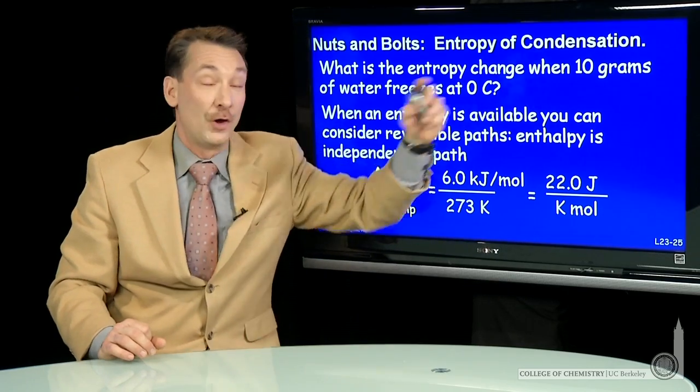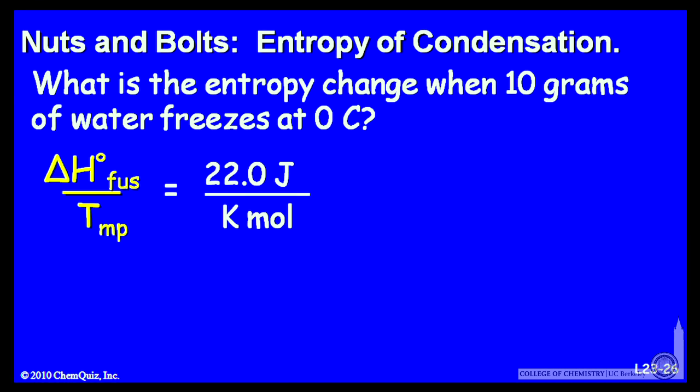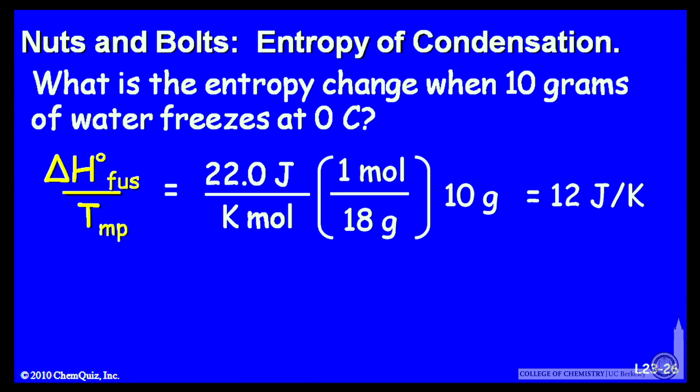But we're not talking about a mole of water. We're talking about just 10 grams of water. So let's take that molar value and use the molar mass of water and the fact that we have 10 grams to find out how much entropy change there is for 10 grams of water freezing. And that's 12 joules per Kelvin to freeze 10 grams of water at its freezing point.